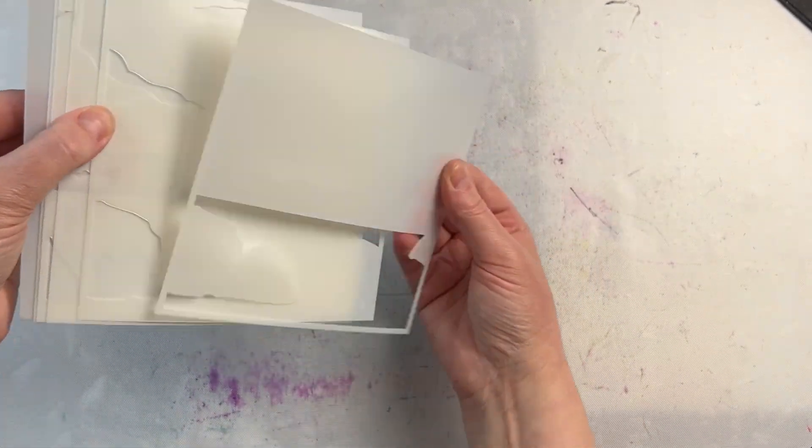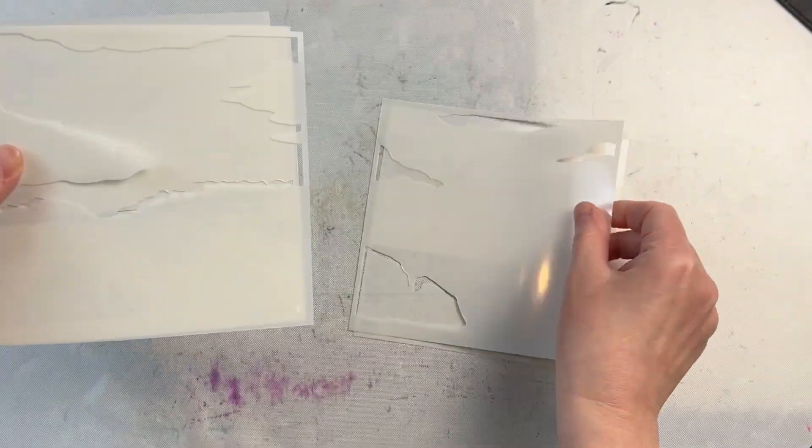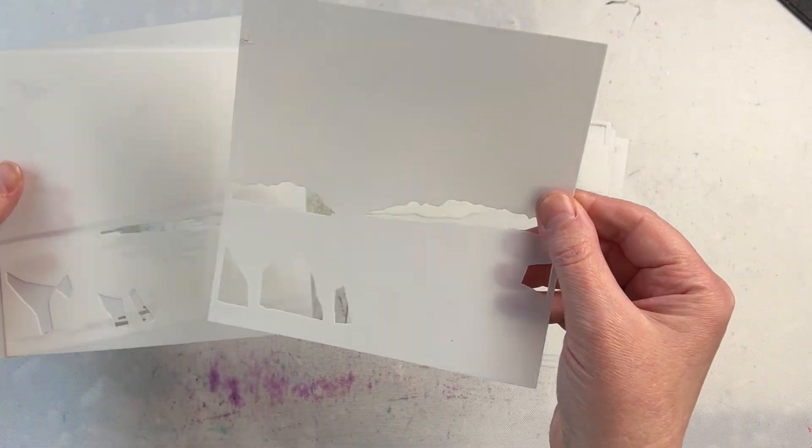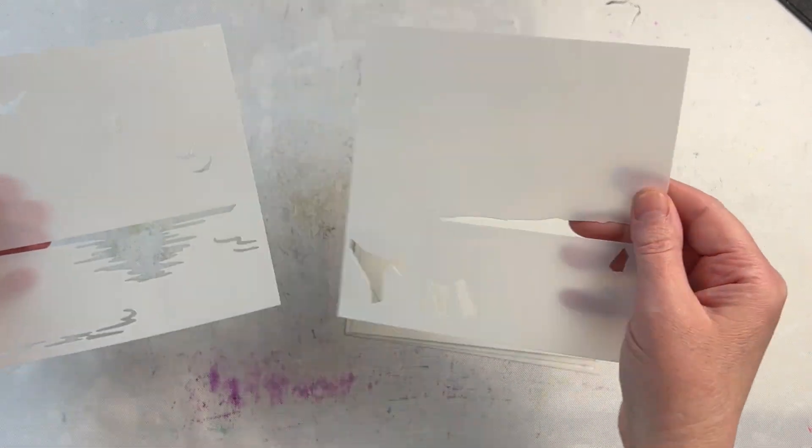This is the Uncharted Waters Layering Stencil from Spellbinders. It's a 6x6 stencil set that has 6 different layers to create a beautiful coastal themed background.